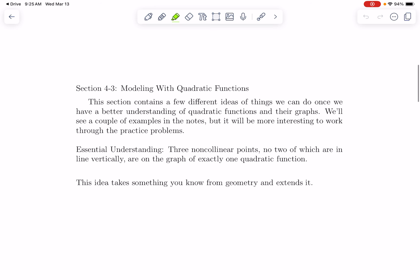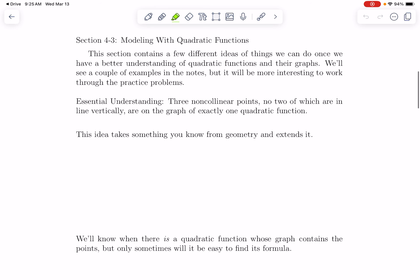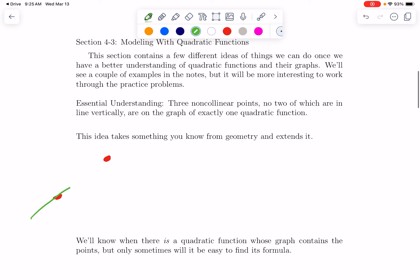So it turns out that if we have three non-collinear points where they all have different x coordinates, they are on the graph of a quadratic function. So there's sort of an analogy here. If I have two points, you may remember from geometry or just in your intuition that there is a unique line that connects those two points. Remember, lines are perfectly straight and go on forever. There are lots of curves that go through those points, but only one line.